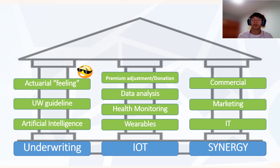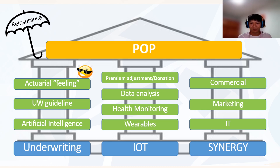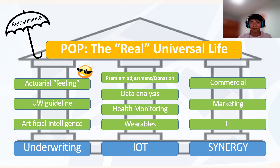That's how we can add value to companies, their services and products, and in so doing, contributing to a better society. But insurance companies need protection, capability and expertise. That's why we need support from the reinsurers. Putting everything together, we can create POP — the real universal life. Because it's really inclusive. It's really universal.